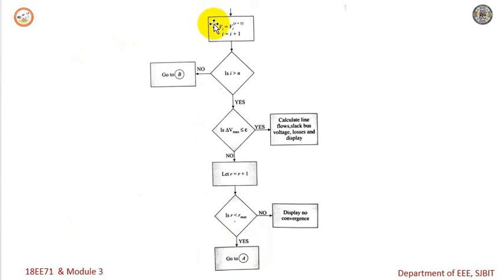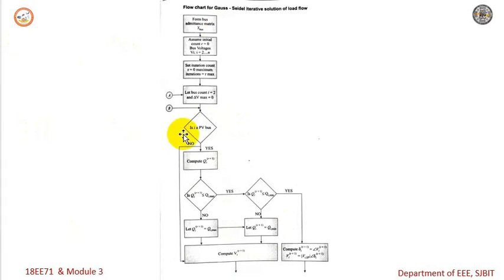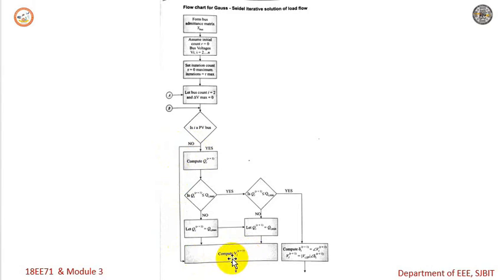Once V_i is computed, if the bus is not a PV bus, the only possibility is that it is a PQ bus. For a PQ bus, the quantities computed are voltage magnitude and angle. We compute the voltage V_i for iteration r+1, from which the angle is also obtained.